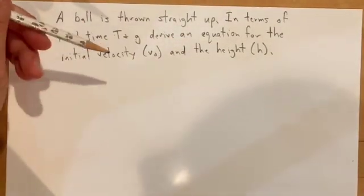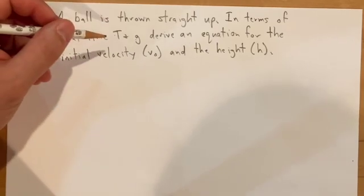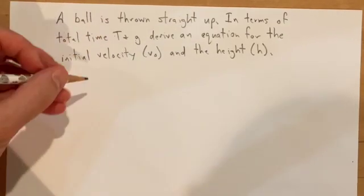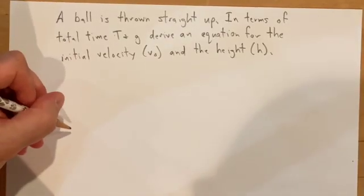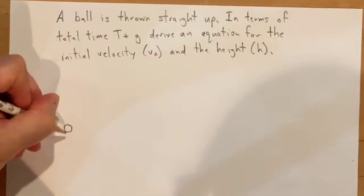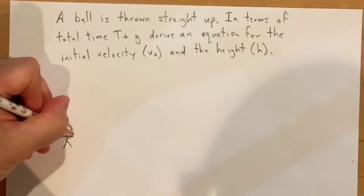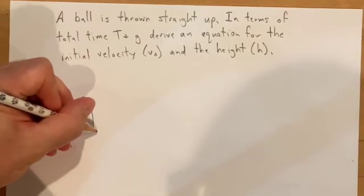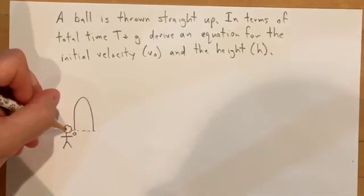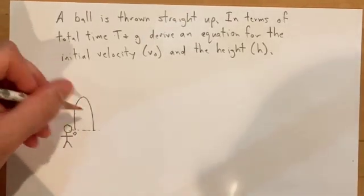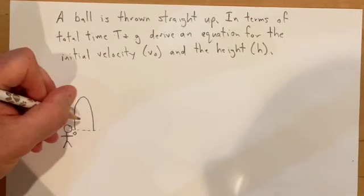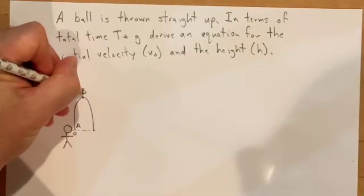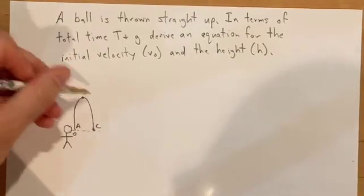What do you do? You always know where to start: you draw a picture. So here you are and you throw a ball straight up and it comes back down. Remember, we're starting and ending at the same height, talking about the symmetrical problem. I'm going to label some important points A, B, and C. You always start with your picture.